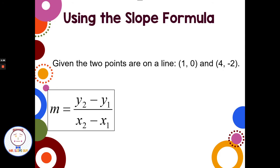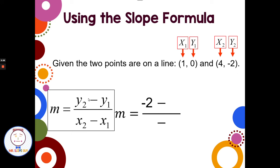The slope formula is m equals y-sub-two minus y-sub-one over x-sub-two minus x-sub-one. With our two points (1, 0) and (4, -2): x-sub-one is 1, y-sub-one is 0, x-sub-two is 4, y-sub-two is -2. So m equals negative two minus zero over four minus one, which gives us negative two over three. The slope is negative two-thirds. You can place the negative with the top number, bottom number, or in front of the fraction — just not both. So the slope of our line of best fit is negative two-thirds.